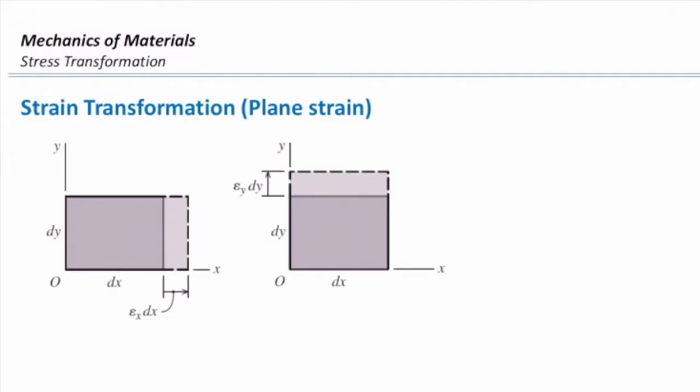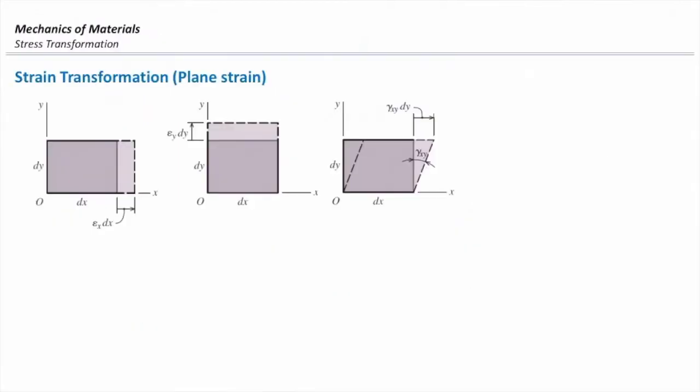These two are normal strains, and there would be a shear strain, which is like this. Shear strain is the change in the angle. And if I combine them all together, that would be the general state of strain in the element.